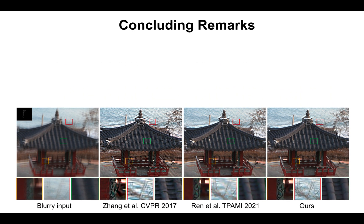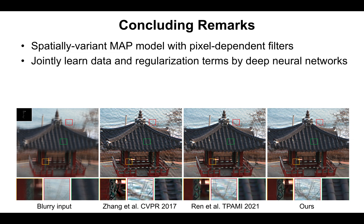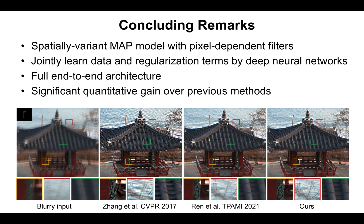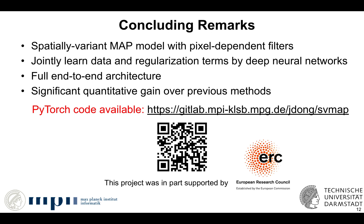To summarize: first, we propose a pixel-specific MAP model to characterize spatially-variant image properties. Second, we jointly learn spatially-variant data and regularization terms using deep neural networks. Third, our end-to-end learning integrates the MAP-based optimization framework as a constraint for the deep neural network to better capture spatially-variant properties. Finally, our approach achieves significant quantitative gains over previous methods. Please refer to our paper and supplemental material for more discussions and experimental results. Thank you.